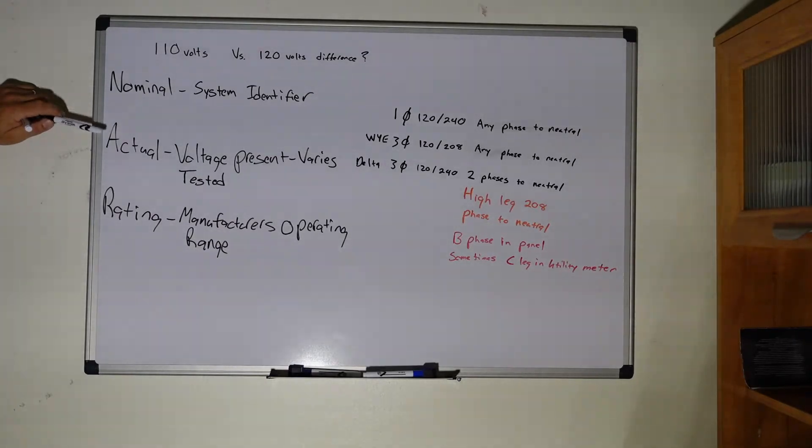The rating is the manufacturer's operating rating range. Sometimes you'll see on receptacles they'll say like 115 volts or 110 volts. There'll be a kind of guideline or a range that the manufacturer gives that says hey, this equipment will operate safely inside of this parameter. It's typically about 10%.